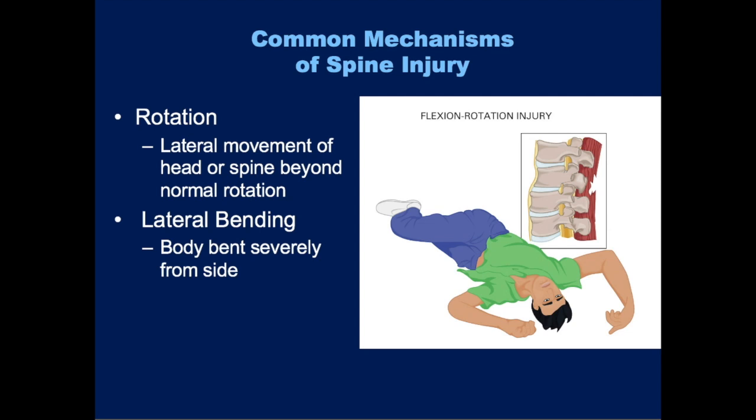Rotation injuries happen when there's lateral movement of the head or the spine beyond its normal range of motion. Lateral bending is when the body or neck is bent severely from side to side.